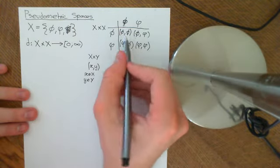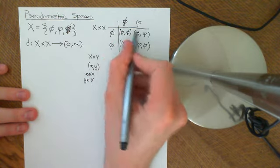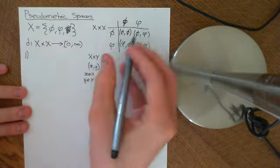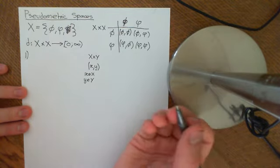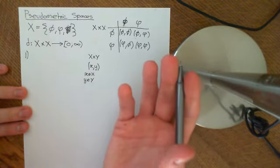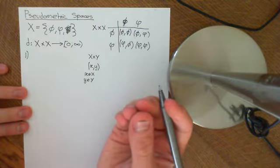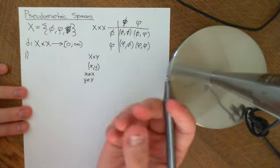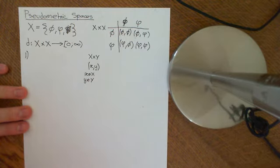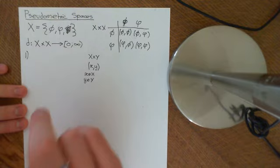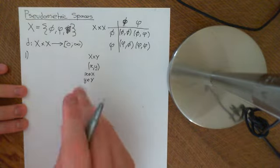Each ordered pair gets a non-negative real number ascribed to it, and it has to obey some axioms. If you want it to obey properties like those we've seen in previous videos — proving things about open balls and closed balls — we relied on the triangle inequality and properties of metric spaces. So we want to conserve some of those axioms, but one axiom of a metric space will not be present in a pseudometric space.